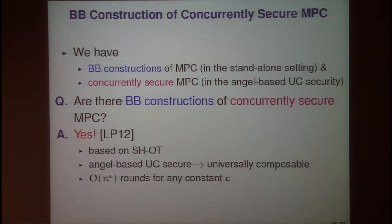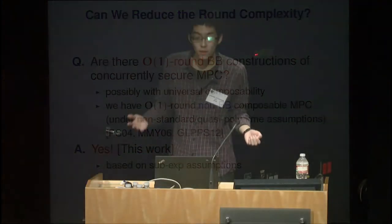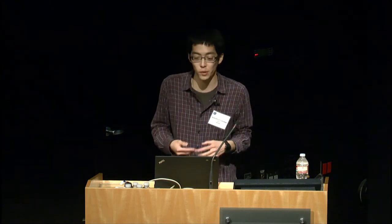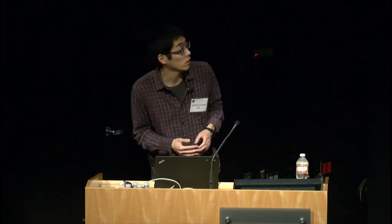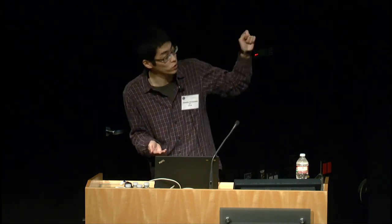The round complexity of that protocol is O(n²). In this work, we consider whether we can reduce the round complexity, and in particular whether we can construct a constant-round protocol. We know that if we use the underlying primitives in a non-black-box way and under a non-standard assumption such as the sub-exponential-time assumption, we already have a constant-round protocol. So whether we can convert this non-black-box result to a black-box result is an important question, and in this work we show the answer is yes.